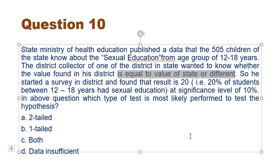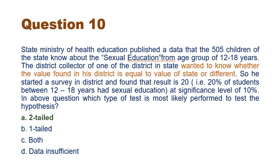If we specify a direction — such as the district statistic is higher than the state statistic — then it would be one-tailed. To clarify: if the null hypothesis is that placebo is equally effective as treatment, and the alternative is simply that there is a difference, that is two-tailed. But if the alternative is that treatment is better than placebo, then it is one-tailed. So in this question, the correct answer is two-tailed.